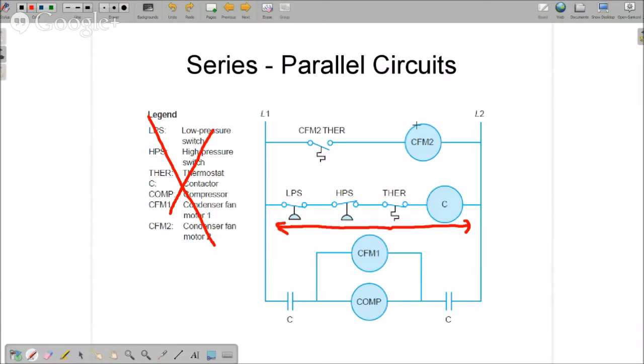And then all the loads are in parallel with each other. So if you have condenser fan motor number two is not running, you're not worried about the contactor over here, the condenser fan motor number one, or the compressor affecting that. Because loads are always in parallel with each other. It's always either your power or your switches, but we'll get into that in more detail in later lessons.